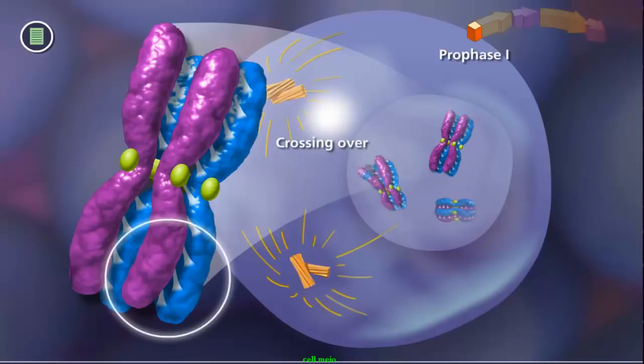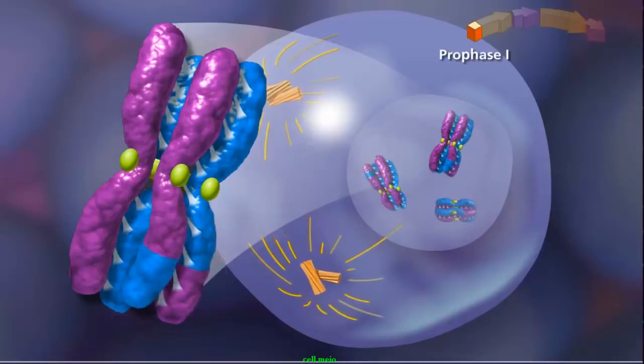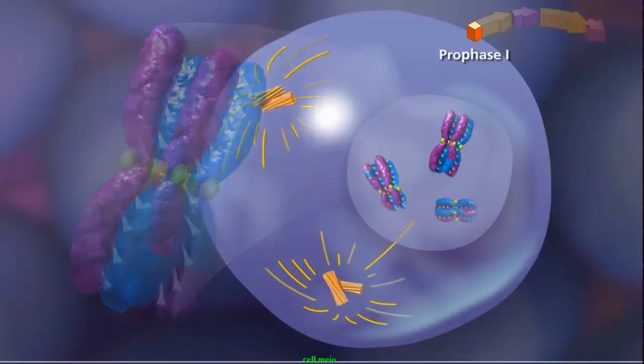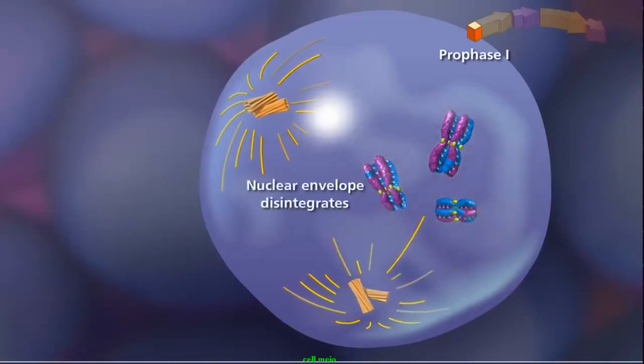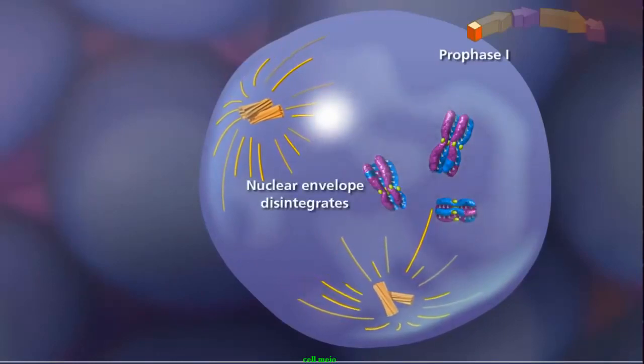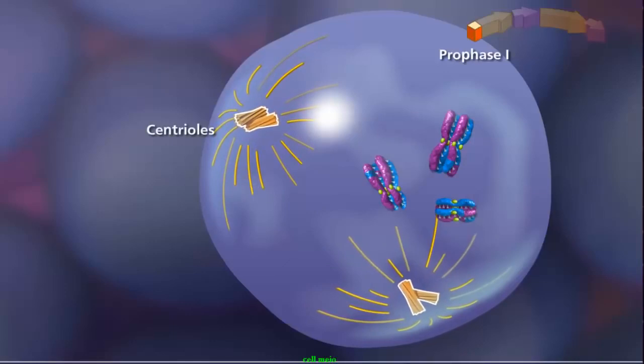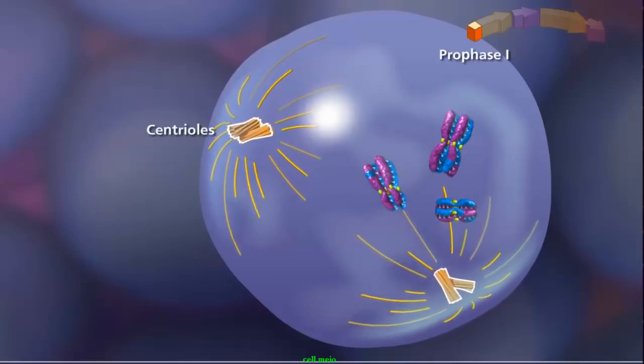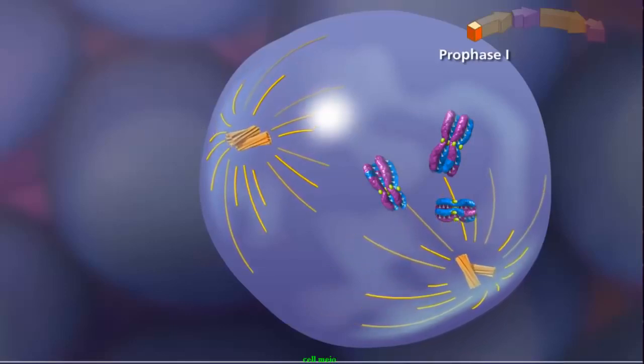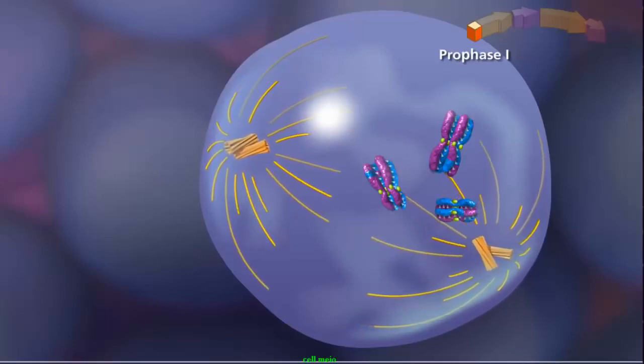During crossing over, a physical exchange between chromosome segments of non-sister chromatids occurs, increasing genetic diversity. Prophase I concludes with the fragmentation of the nuclear envelope as the duplicated centriole pairs move to opposite poles of the cell. As they move, the centrioles extend spindle fibers, forming the meiotic spindle.